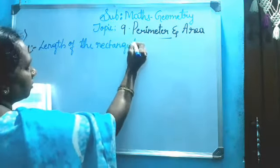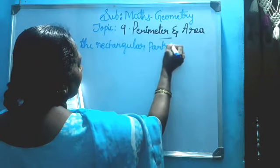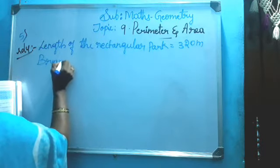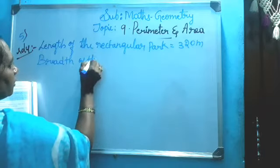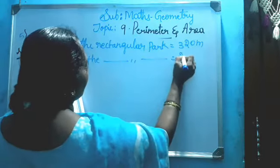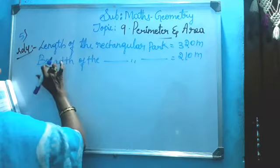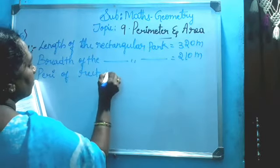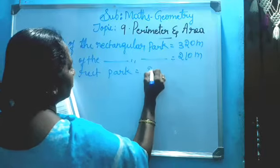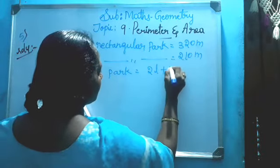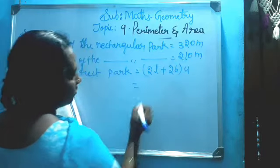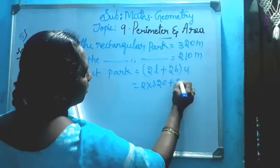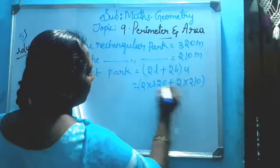First write: length of the rectangular park is 320 meters. Breadth of the rectangular park is 210 meters. So perimeter of rectangular park we don't know. Apply: 2 length plus 2 breadth, unit. See, 2 right as is, length how much? 320, plus breadth 210 meters.